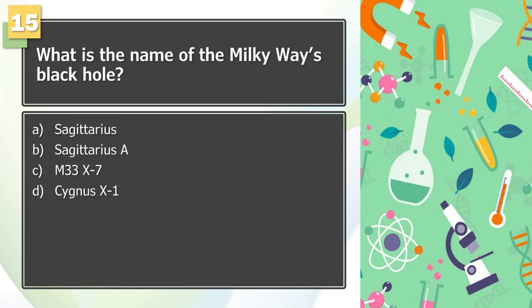Number 15: What is the name of the Milky Way's black hole? A. Sagittarius, B. Sagittarius A, C. M33x7, D. Cygnus X1.